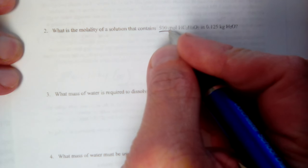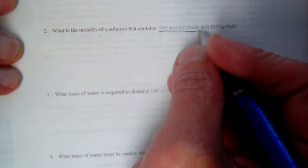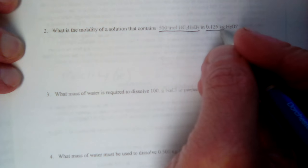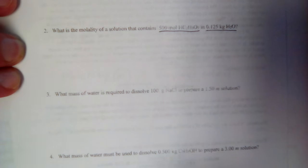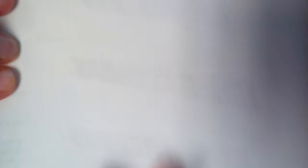In this question, I have 0.5 moles of HC2H3O2 and I have 0.125 kilograms of water. I have moles of a solute and I have kilograms of a solvent. I have exactly what I need for my equation. Moles of solute, kilograms of solvent.